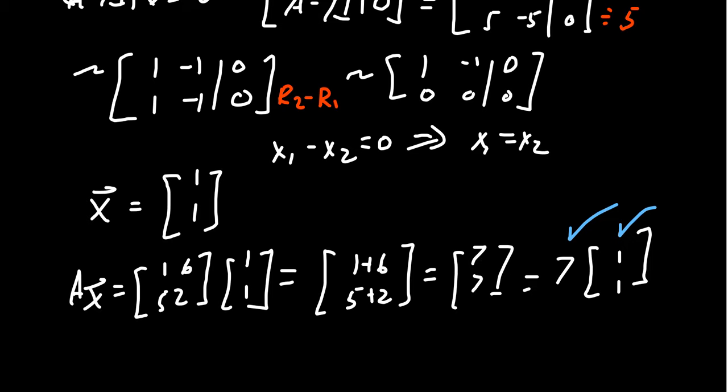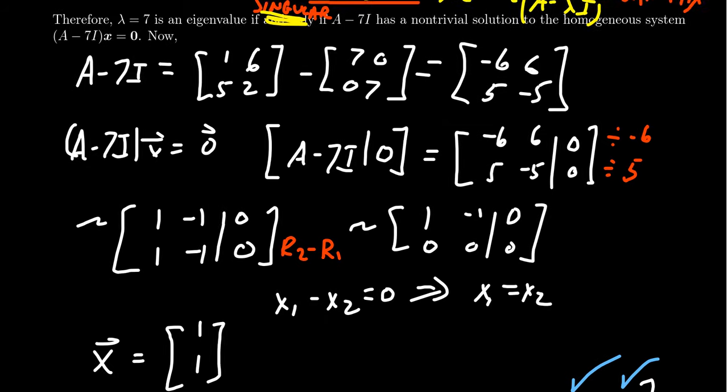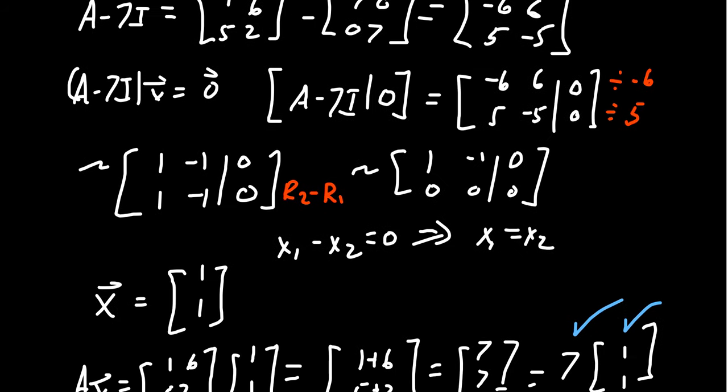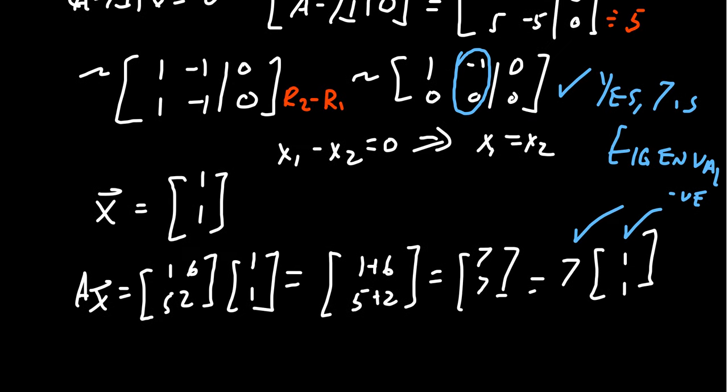So what we've seen right here in this calculation is that we can check if we had an eigenvalue or not. So coming back up to this location right here, we were prepared to say that yes, 7 is an eigenvalue at that location. And that's because the homogeneous system A minus 7I x equals 0 has a non-trivial solution. We solve that by seeing the free variable right here in the system.